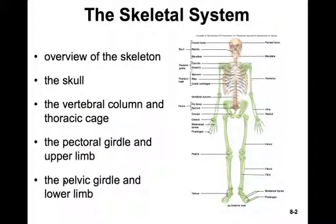Now we really get into some anatomy as we start to examine the skeletal system. In this chapter, you'll want to spend a lot of time in Anatomy and Physiology Revealed, looking at these actual bones and structures. We'll spend time in lab also, looking at Hank, our skeleton. It's going to be imperative that you put together a really good outline of all these different structures. You'll be held responsible for all the structures listed in the text of this chapter.